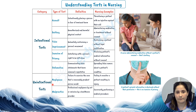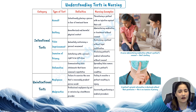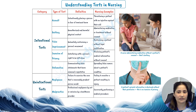Defamation involves sharing false information that harms a patient's reputation. For unintentional torts, negligence refers to a failure in providing the expected standard of care, like missing essential patient monitoring. Malpractice is a type of professional negligence where a healthcare provider's improper or unethical conduct — such as performing a procedure incorrectly — directly results in patient harm. Malpractice is more specific to the professional's actions or inactions that deviate from accepted standards of practice in the medical community.